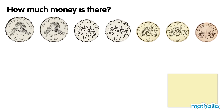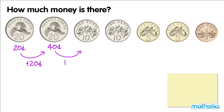Let's count the coins. 20 cents plus 20 cents is 40 cents. 40 cents plus 10 cents is 50 cents. 50 cents plus 10 cents is 60 cents.